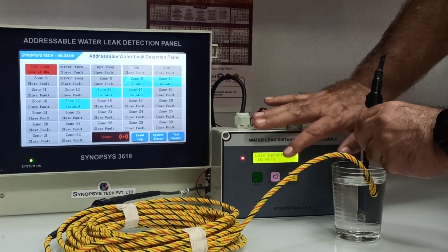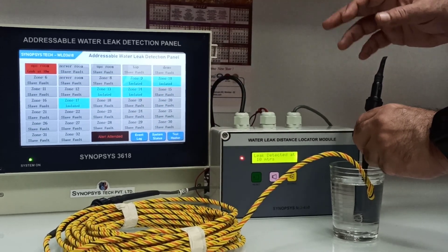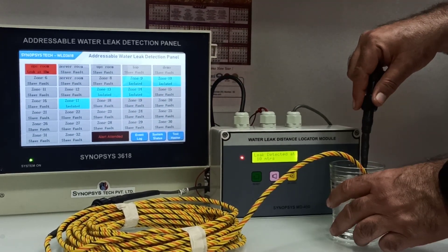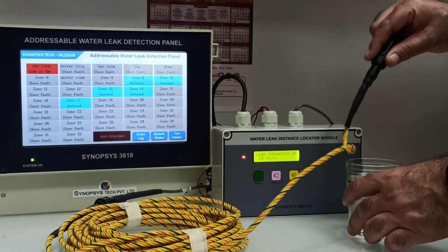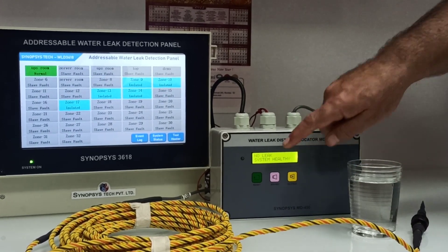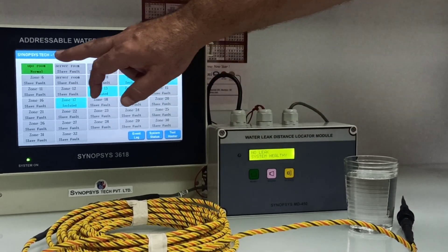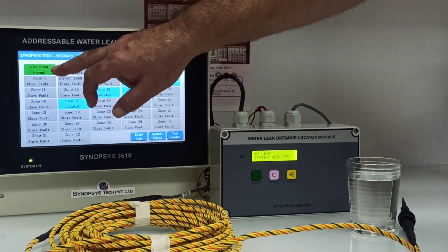You can silence the SIM module. You can silence the touchscreen panel. Once you remove the cable, wipe the water out, this turns normal. The breather LED starts blinking. This turns green. Green is normal mode.